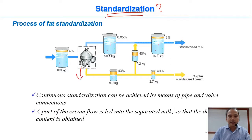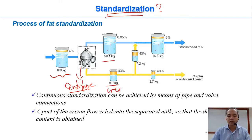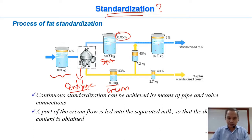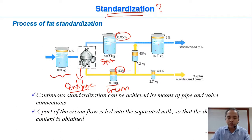How do they do it? They use a centrifuge — a separator machine — to separate raw whole milk into skim milk and cream. Skim milk still contains a little fat, about 0.05%; you cannot separate 100%. A typical cream normally has 40% fat. Now they can combine parts of this cream fraction back into skim milk to standardize the milk at 3% fat.